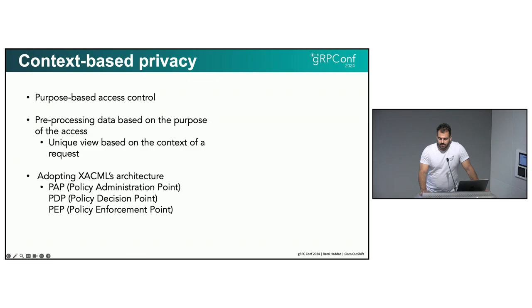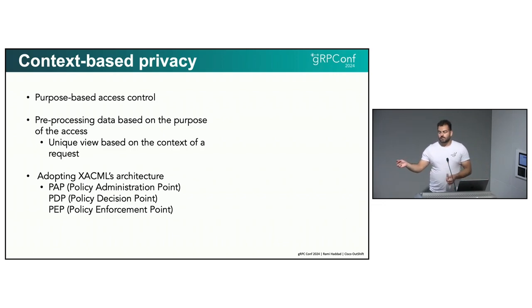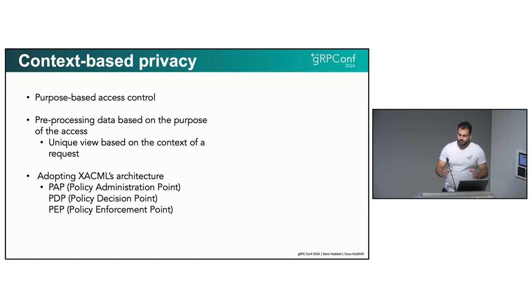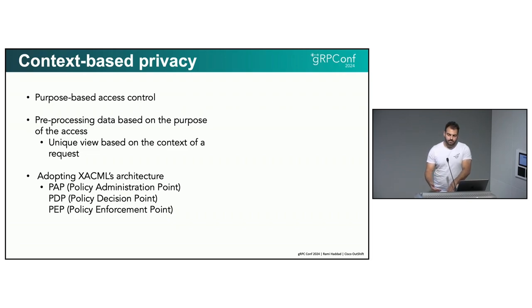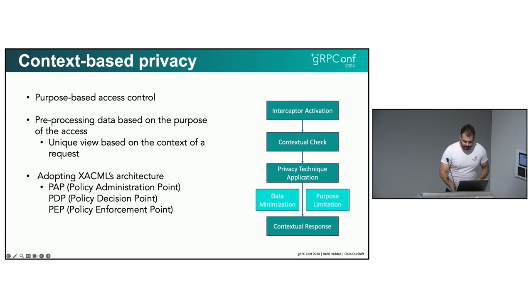We tried to minimize the middleware because it's just another layer between gRPC operations. The idea is that if a gRPC request is made by the client to a server, the client would have to create a JWT claim. That claim contains what data they would like to have and for what purpose. The middleware sits in between, validates the JWT, validates what the client is requesting, parses it, checks the purpose, and performs purpose limitation or data minimization on that data before returning it. We can run through that in the code given the time we have.